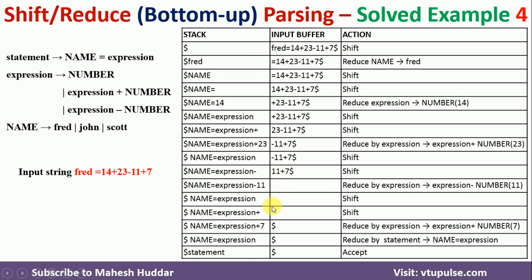After 11 is shifted, we are left with plus and then 7. Once plus and 7 are consumed, nothing is left in the input buffer. Expression plus number is reduced to expression. Now we have name equals expression on the stack with an empty input buffer, so we can reduce to statement.